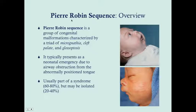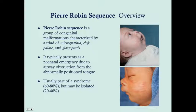Usually Pierre Robin sequence is part of a syndrome, and there are various diseases that can cause it. These three findings together define Pierre Robin sequence, but you can have isolated Pierre Robin syndrome — where that's the only finding — and that only occurs in 20 to 40 percent of cases.